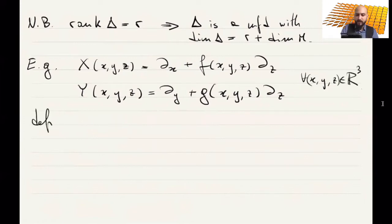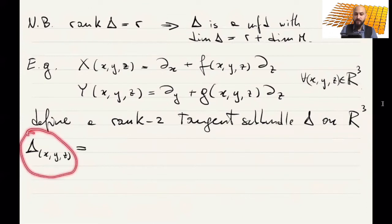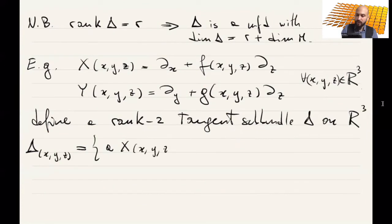Then these two vector fields define a rank two tangent sub-bundle delta of R³. Namely, delta at the point (x,y,z), it is clear that one can just define the fiber at every point, and then the bundle is just the union of them.